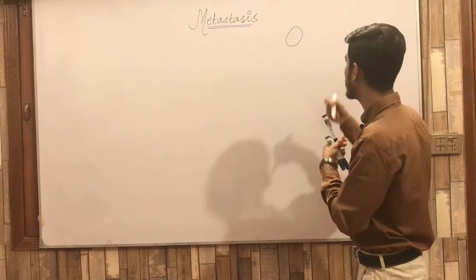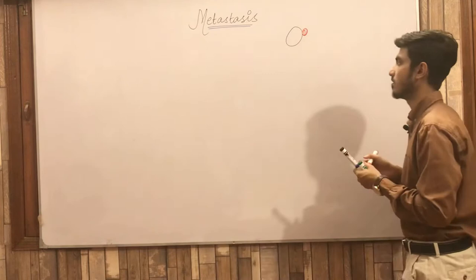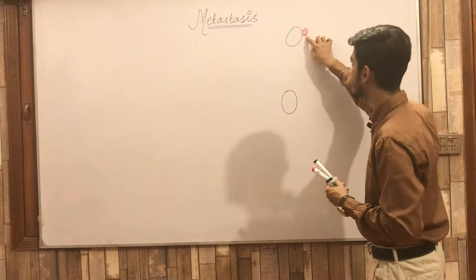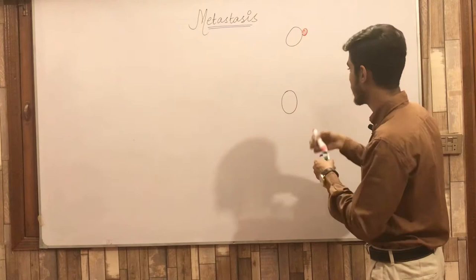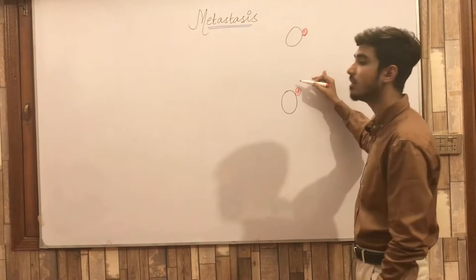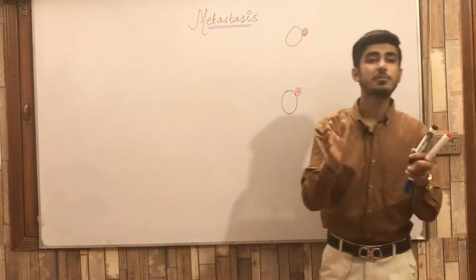For example, this is your organ, and this is the tumour that arises in this organ. Now suppose there is another organ. If this tumour spreads to that site and that site is discontinuous with the primary tumour, this is called metastasis — the spread of the tumour to a distinct site.